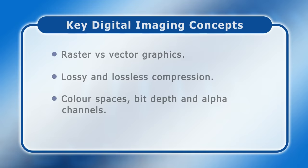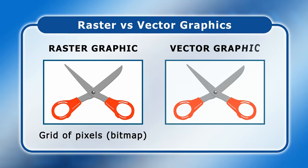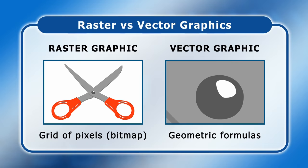Starting with raster versus vector graphics: raster formats store images as a grid of pixels, or what is known as a bitmap. Meanwhile, vector formats store each part of an image as a geometric formula. This means that if you scale up a vector image it's always sharp. In contrast, if we enlarge a raster image we see the jagged edges of the pixels.